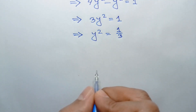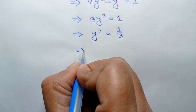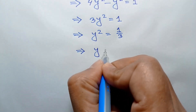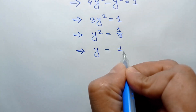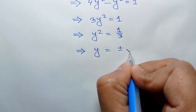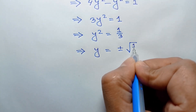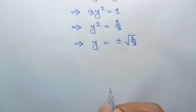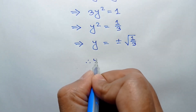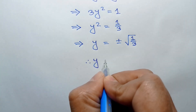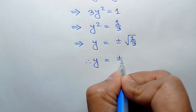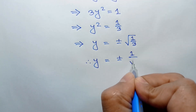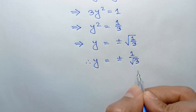Taking square root of both sides, we will have y is equal to plus or minus square root of 1 over 3, so the value of y is equal to plus or minus 1 over square root of 3.